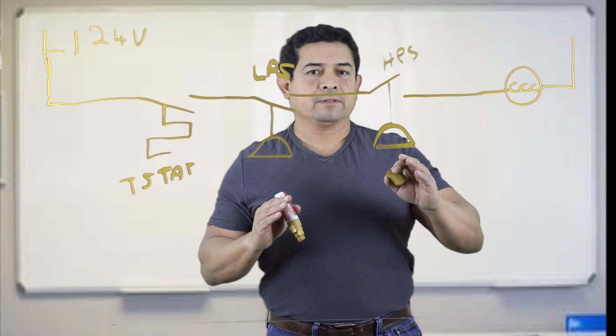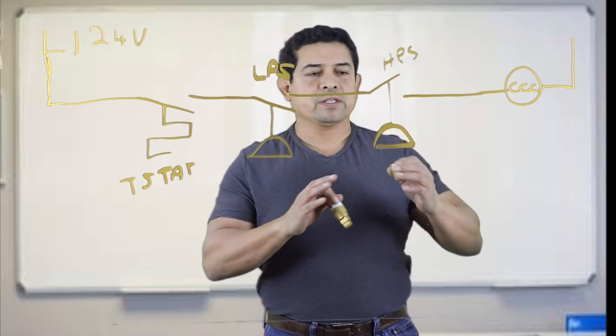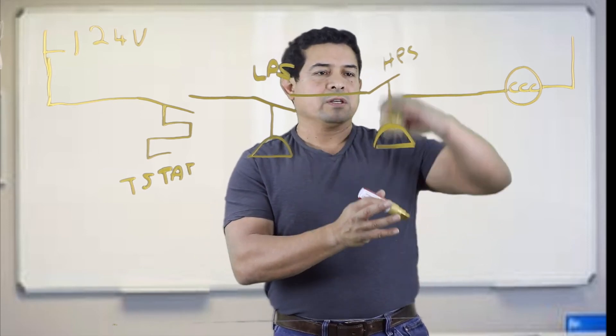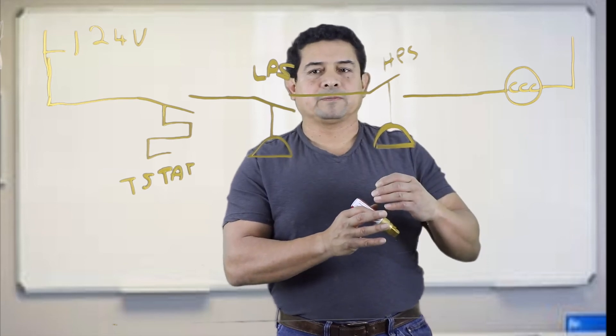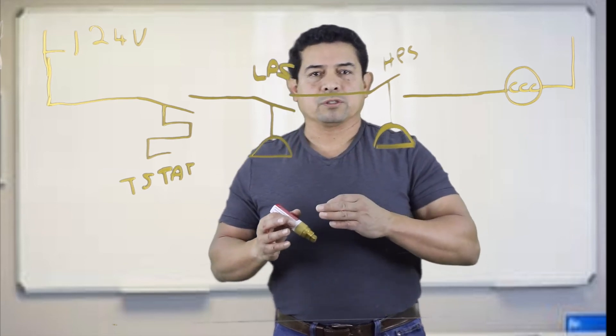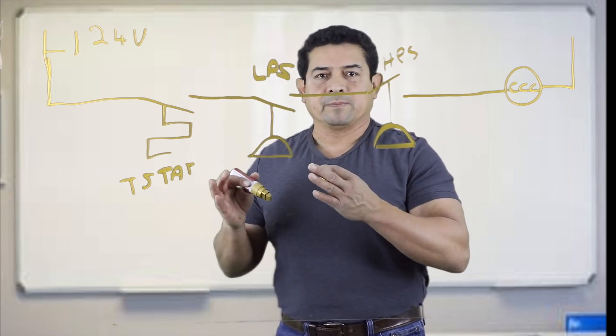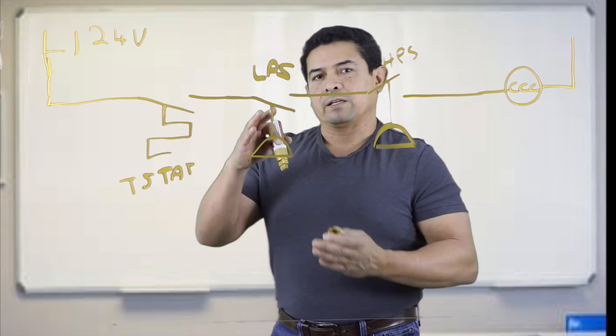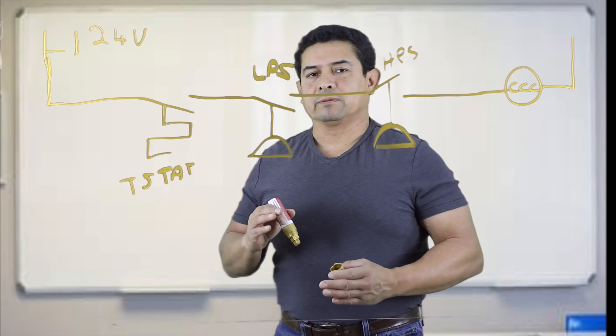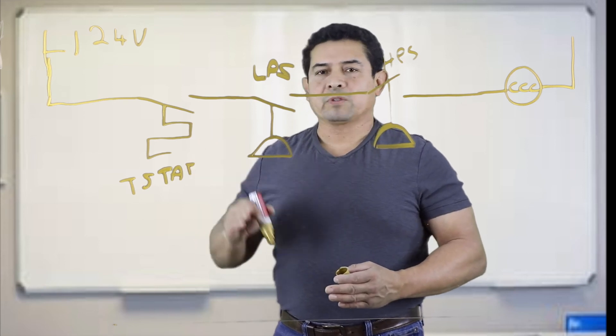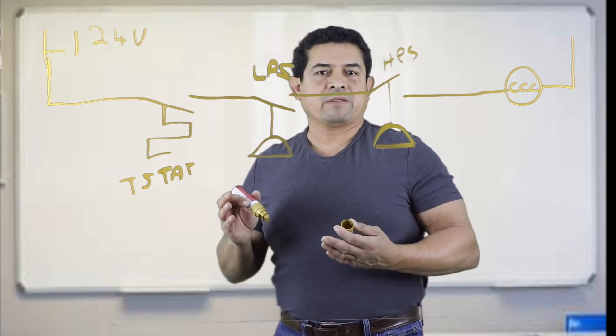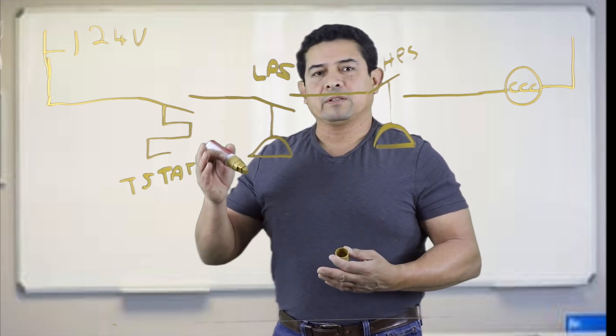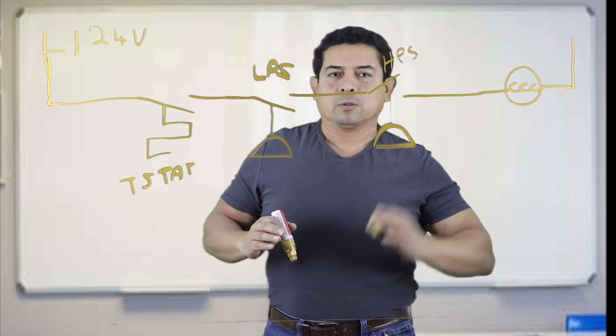Pressure gets too high. Let's say on an R22 system, gets up to 350 pounds, 375, that opens up. Low pressure switch, let's say for a 410A system, pressure gets down to 50, 60 pounds, it's going to open up. Pressure dropped too low. Room temperature, let's say you have it set to 72. When it gets below 72, that opens up. It shuts the whole circuit down.